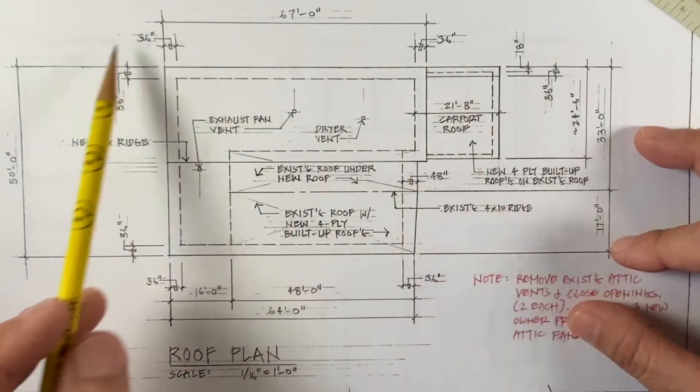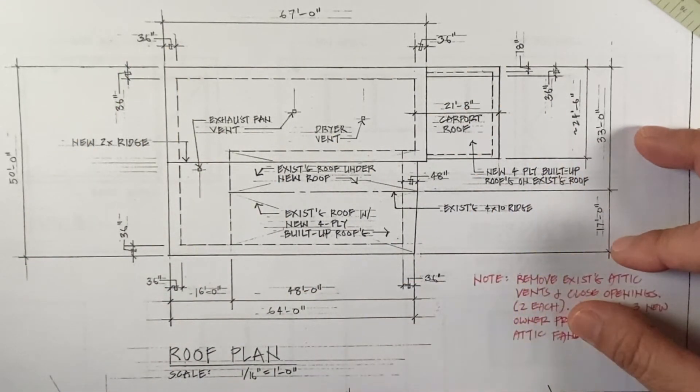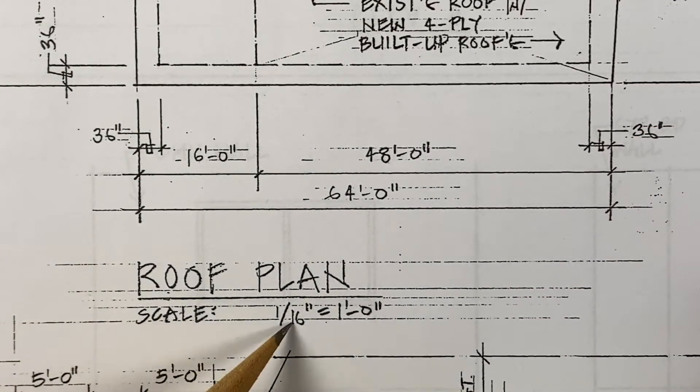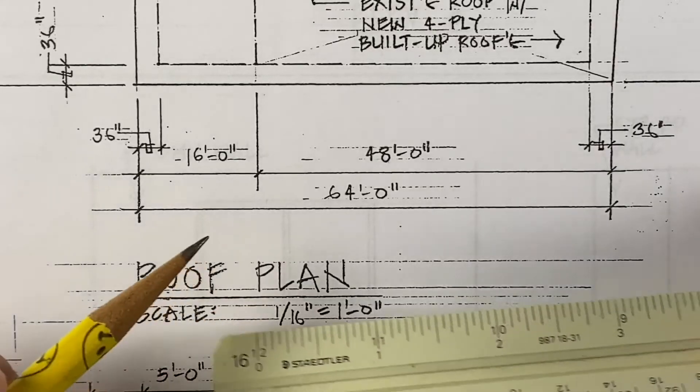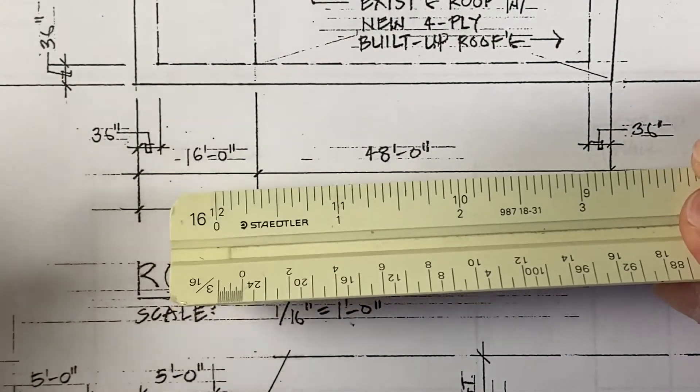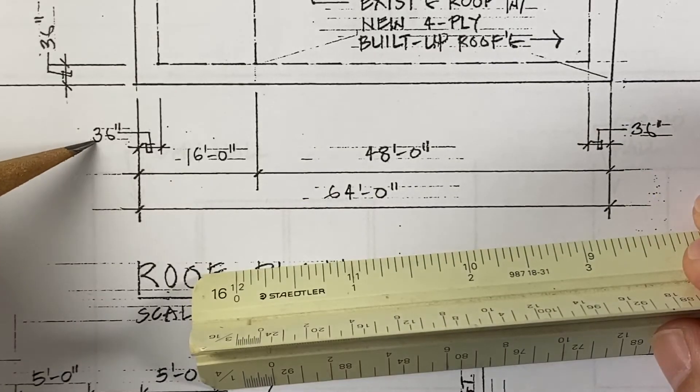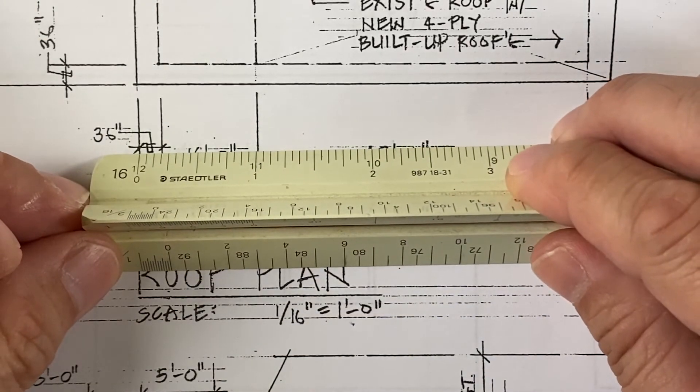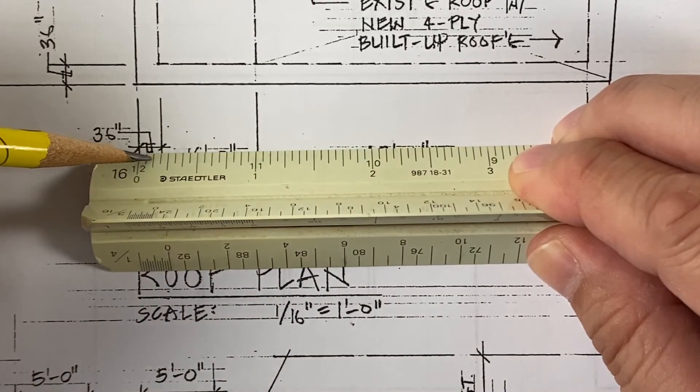Versus this roof plan that shows the entire roof of the structure at a much smaller scale. In this case, sixteenth of an inch equals a foot. We can measure or verify this 36 inch dimension or three feet. One, two, three.